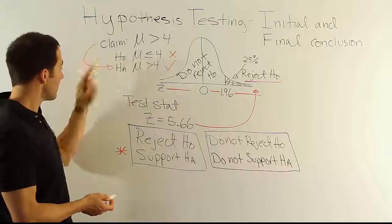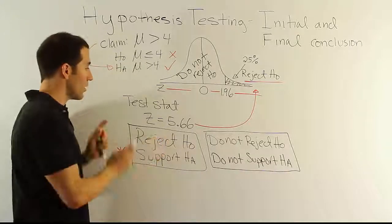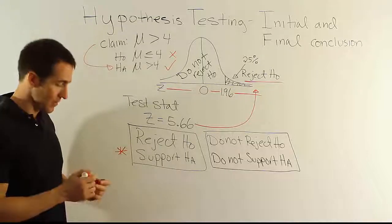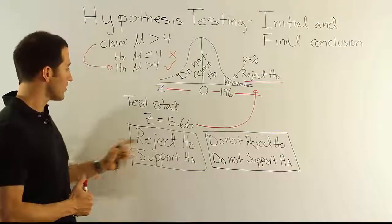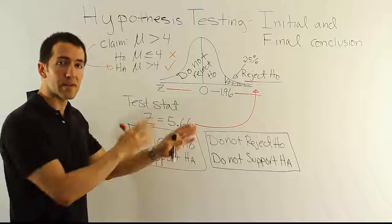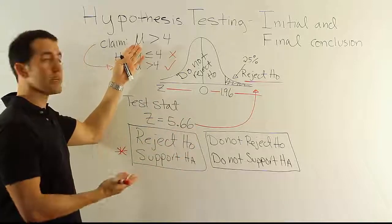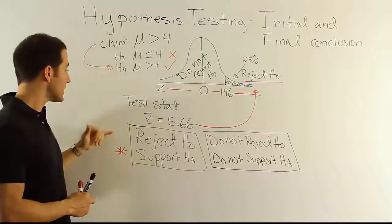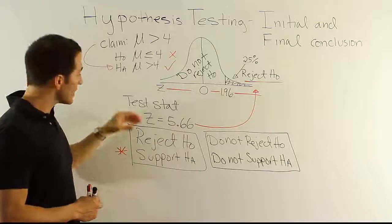If our claim had been H0, we would have said we reject the claim. And that's it. It's that simple. So you'd say the sample data support the claim that the mean time to complete a college degree, a bachelor's degree, is greater than four years. Or you'd say the sample data causes us to reject the claim, right? That's one possibility.